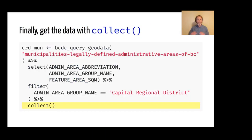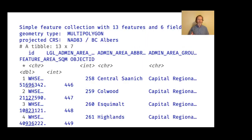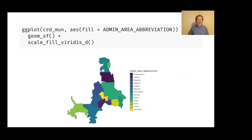Finally, we finish building our pipeline and say we want the data now. We just tag collect onto the end of the pipeline, just like in dbplyr interfacing with a database, and it sends that query to the web server, runs it, and downloads just those features and just those columns we asked for, returning it as an SF object. Now we've got a real SF object with 13 features, six fields, as a multi-polygon. This is the capital regional district with the boundaries of the 13 municipalities within it — I live down in one of those southern ones in Victoria.